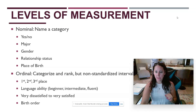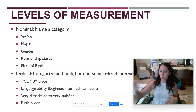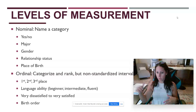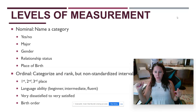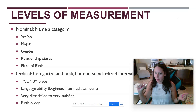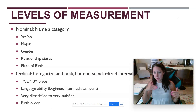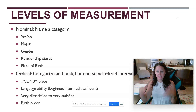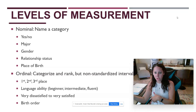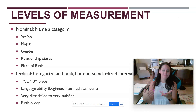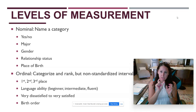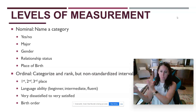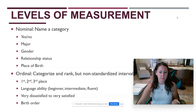Birth order is another ordinal example. You can compare first and second borns, but in one family the gap might be 11 months, while in another it might be 12 years. Or there's a one-year difference between the first and second born, and a seven-year difference between the second and third born. I can put them in order, but I can't make any meaningful differentiations between the quantities between those orders.